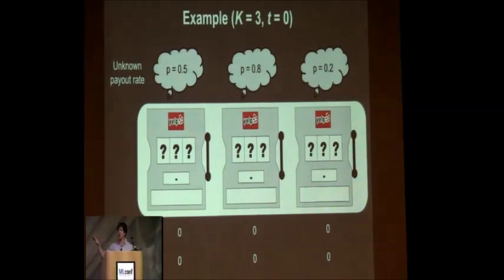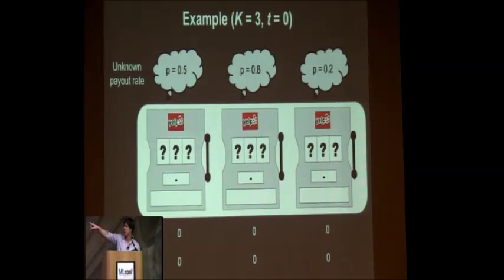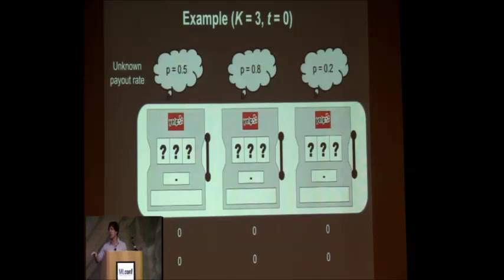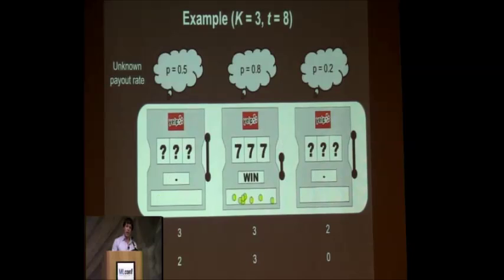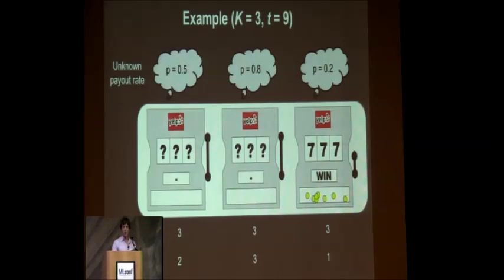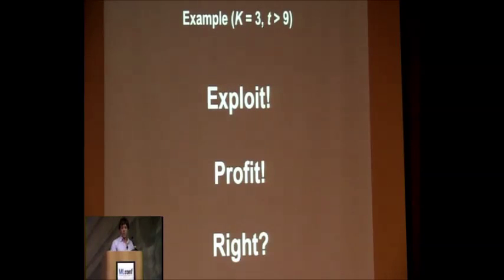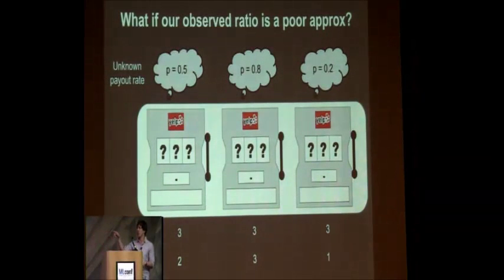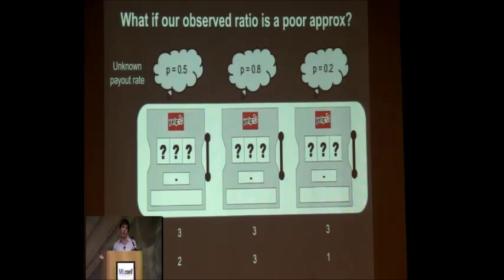Here's a toy example. Welcome to El Casino — we have three different slot machines, each with a different and unknown payout rate. The algorithm doesn't know the rates, but I'm showing them to you. After nine iterations, we've sampled each slot machine three times and we see that the middle one wins 100% of the time. Perfect — let's just hit that one. Exploit and profit forever, right? Well in this particular situation it actually works out, because in our few samples we've selected the best one, so we'll have very little regret.